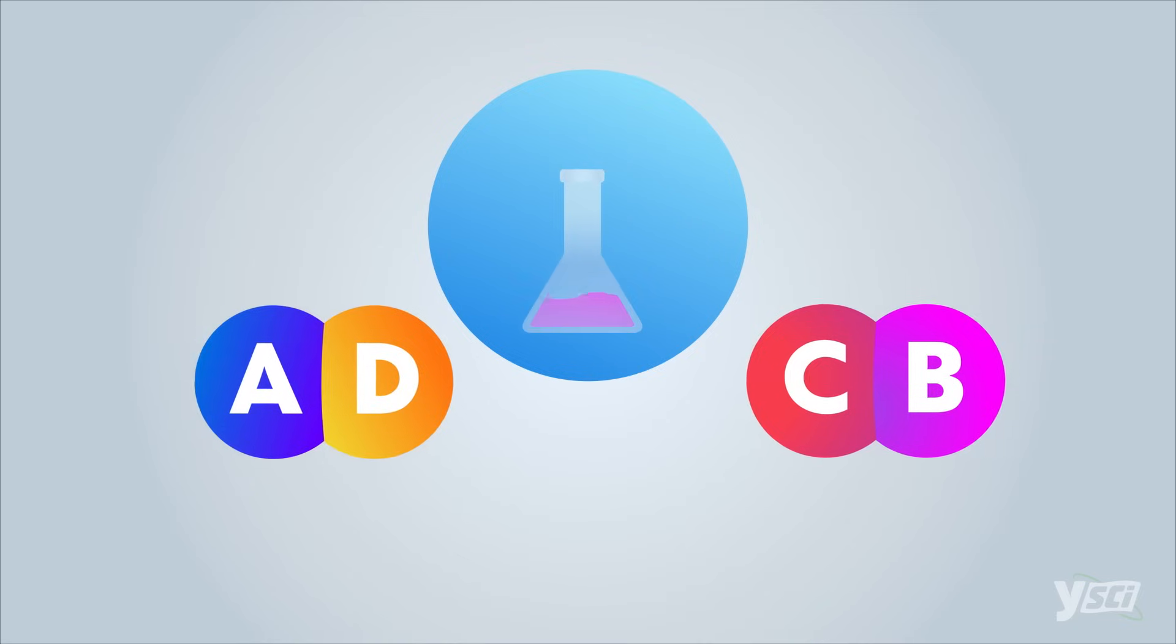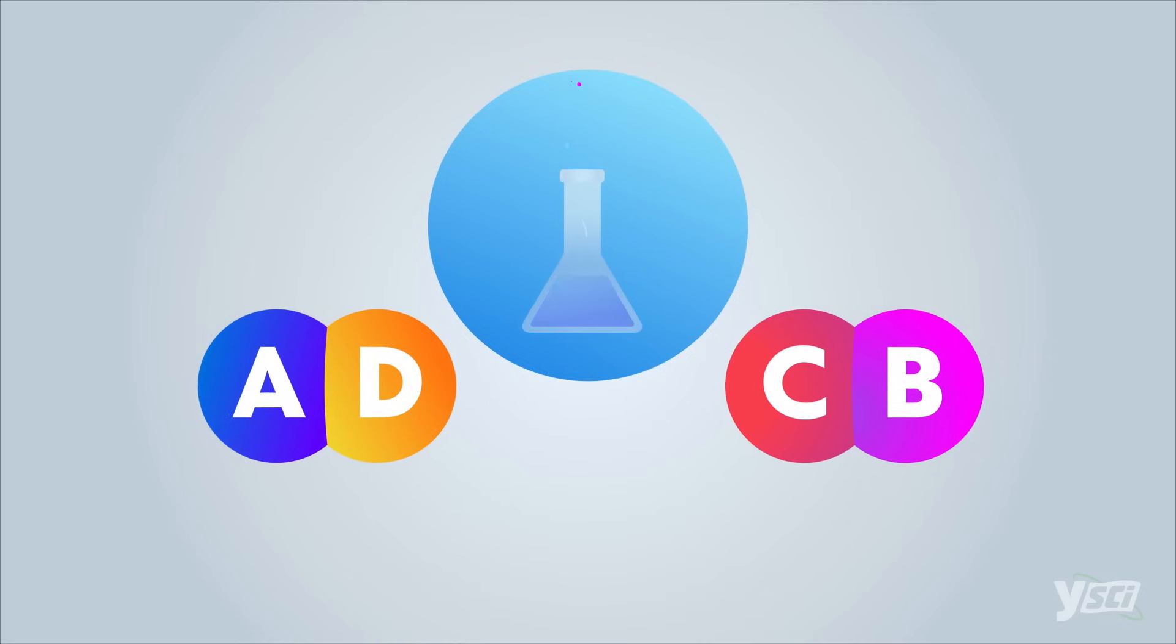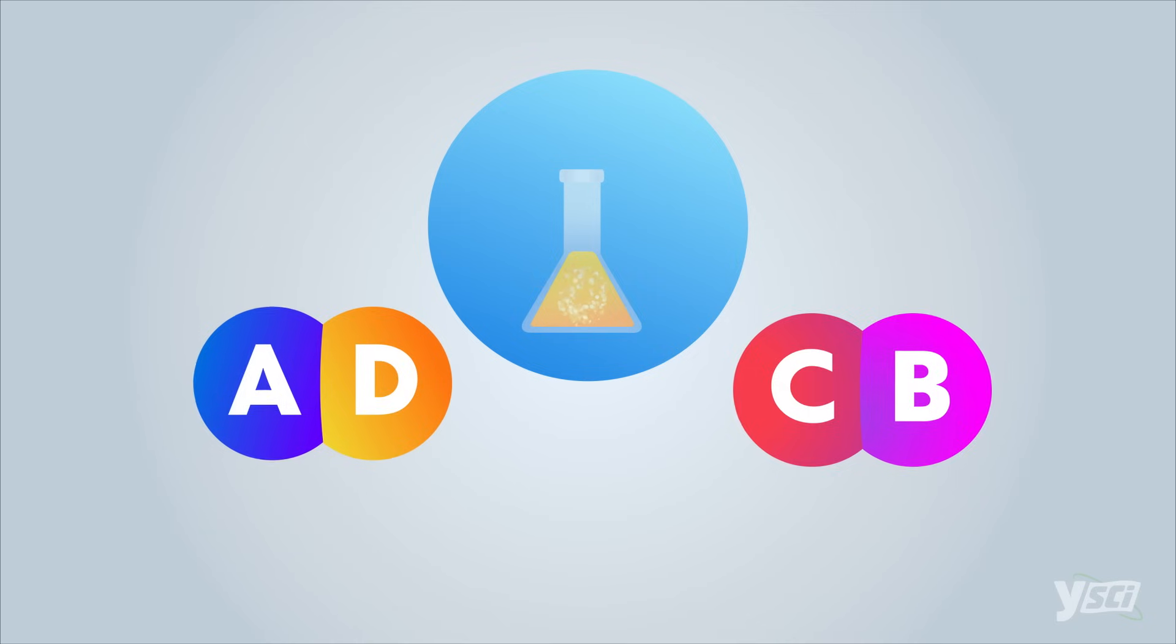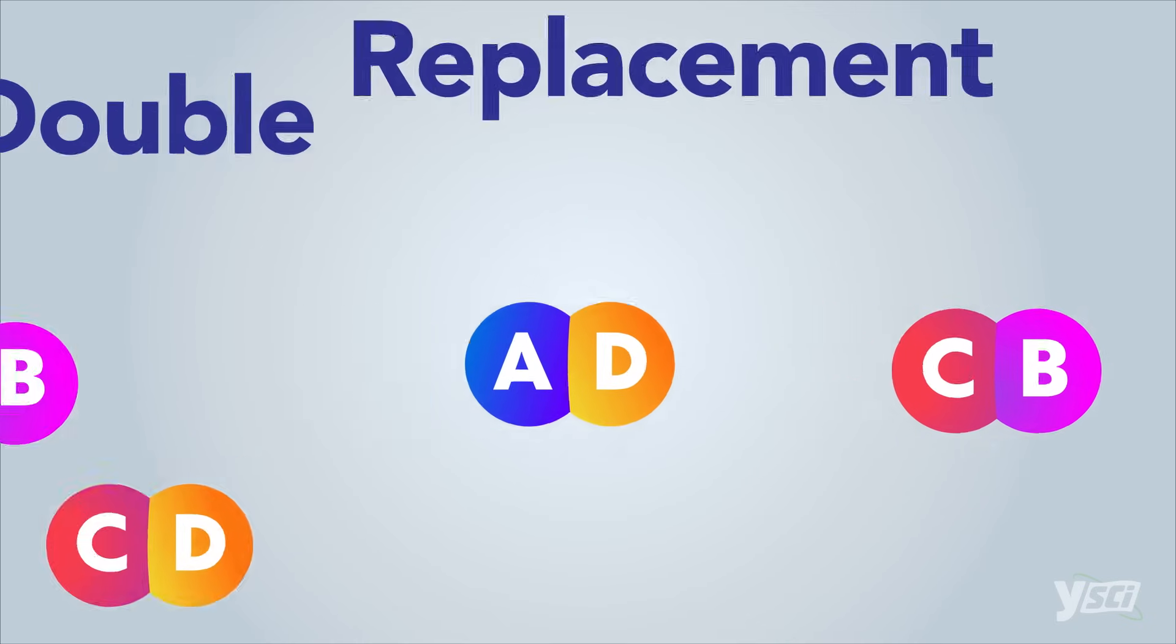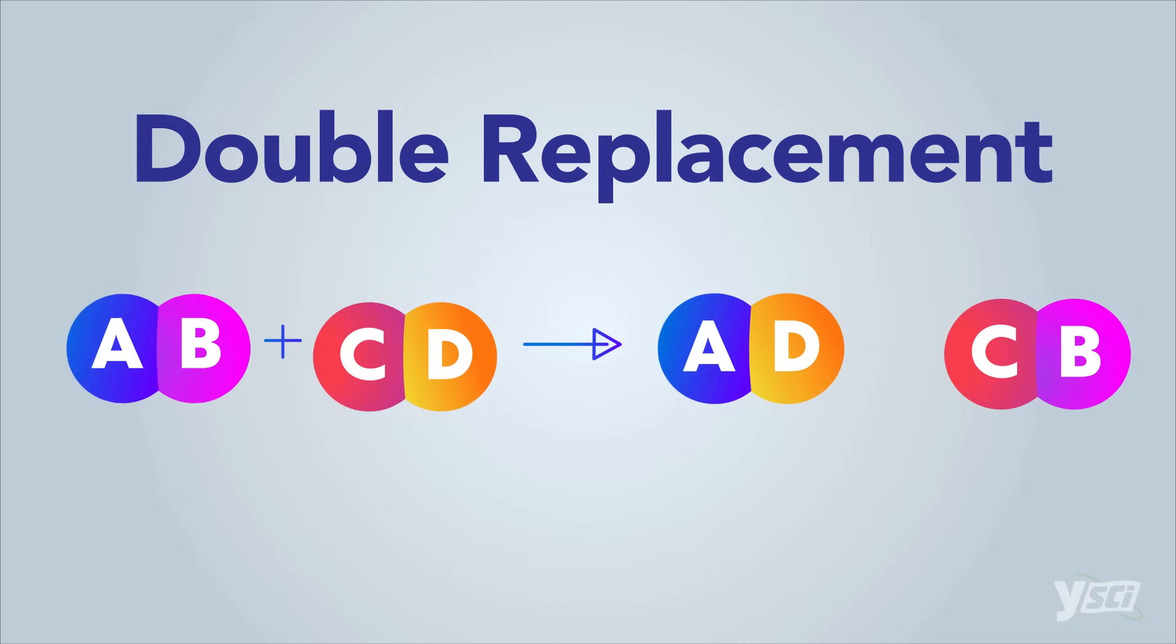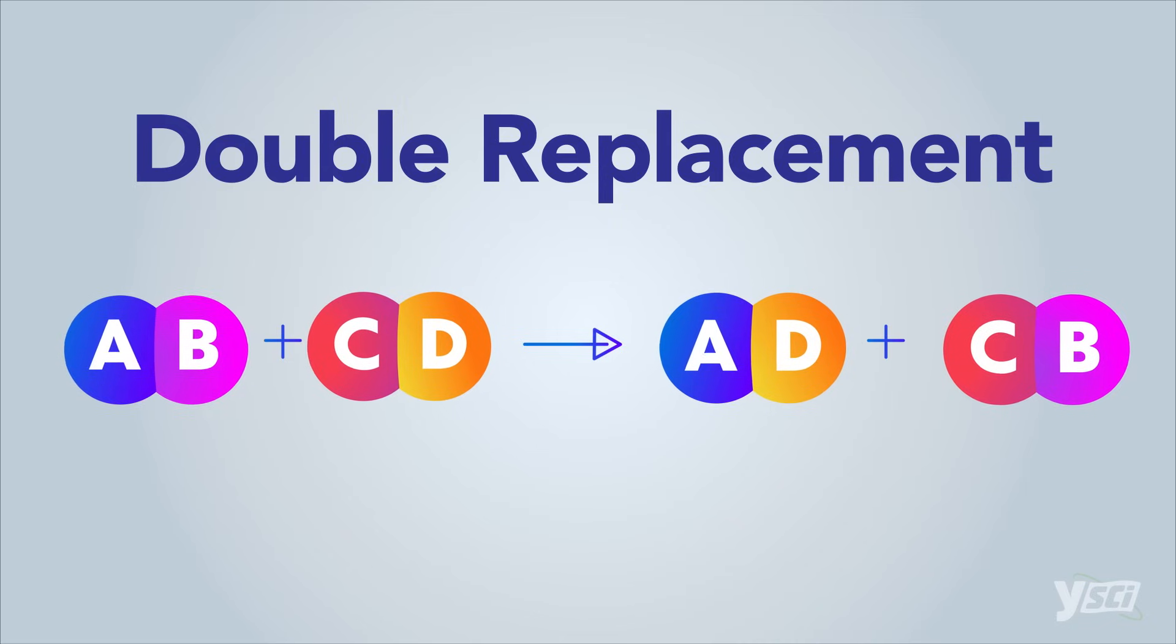One of those products is always a gas, water, or precipitate. The generalized formula is AB plus CD yields AD plus CB.